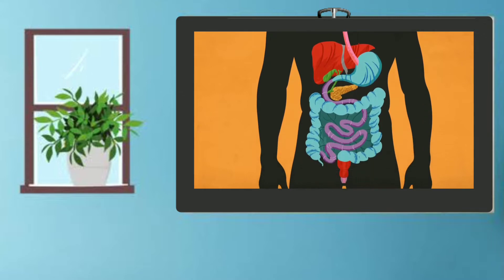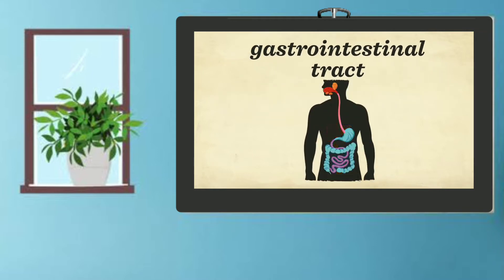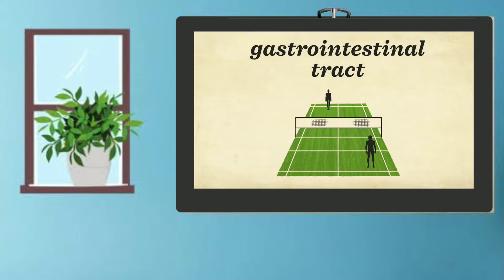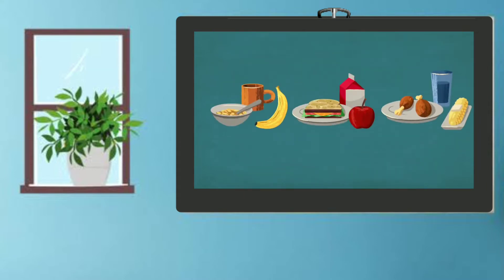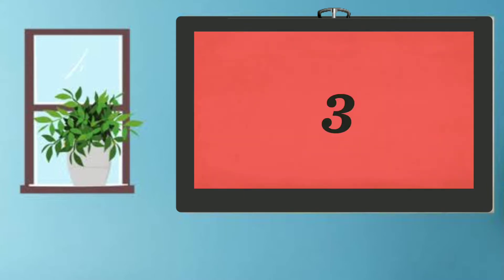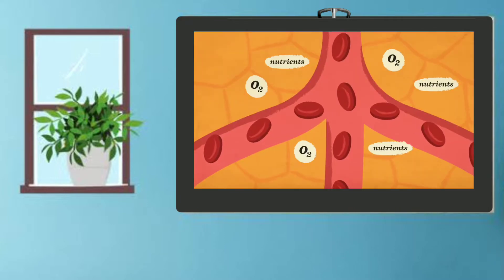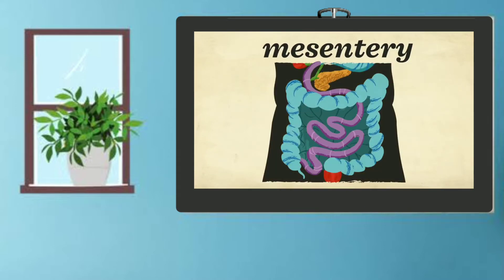Spanning the entire length of your torso, the digestive system has four main components. First, there's the gastrointestinal tract, a twisting channel that transports your food and has an internal surface area of between 30 and 40 square meters — enough to cover half a badminton court. Second, there's the pancreas, gallbladder, and liver — a trio of organs that break down food using an array of special juices. Third, the body's enzymes, hormones, nerves, and blood all work together to break down food, modulate the digestive process, and deliver its final products. Finally, there's the mesentery, a large stretch of tissue that supports and positions all your digestive organs in the abdomen.